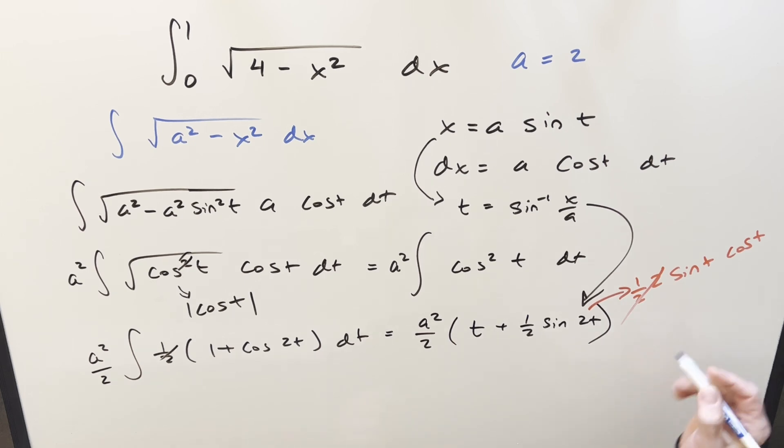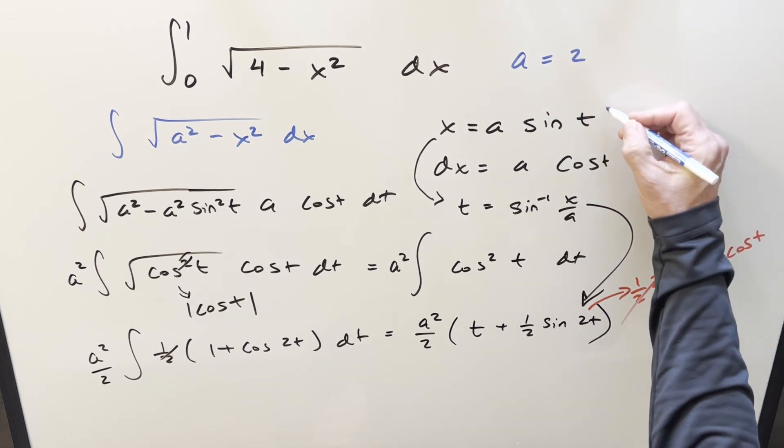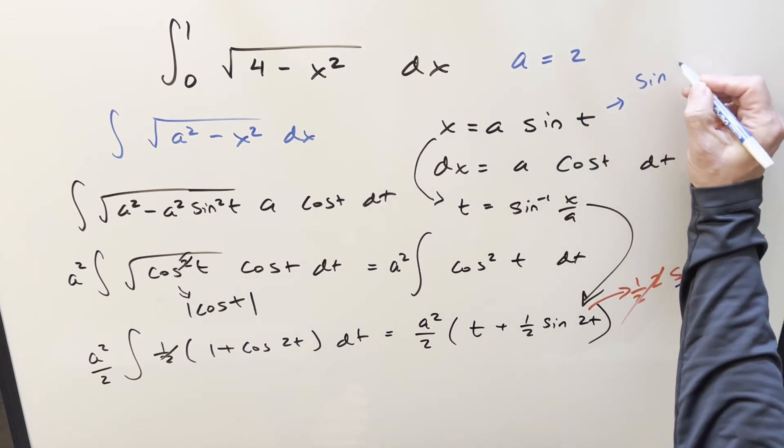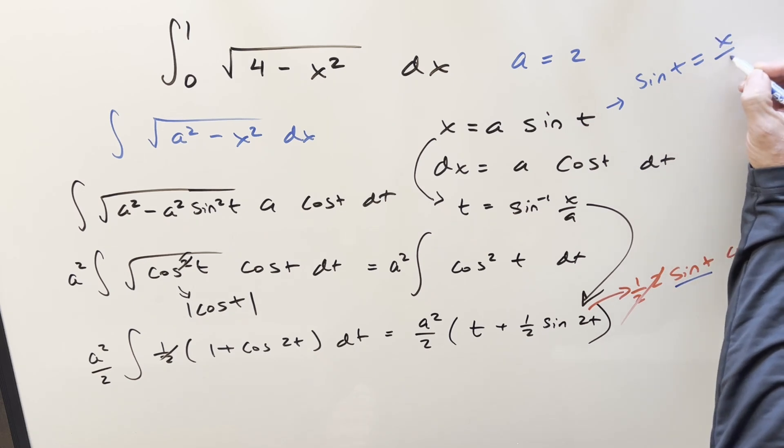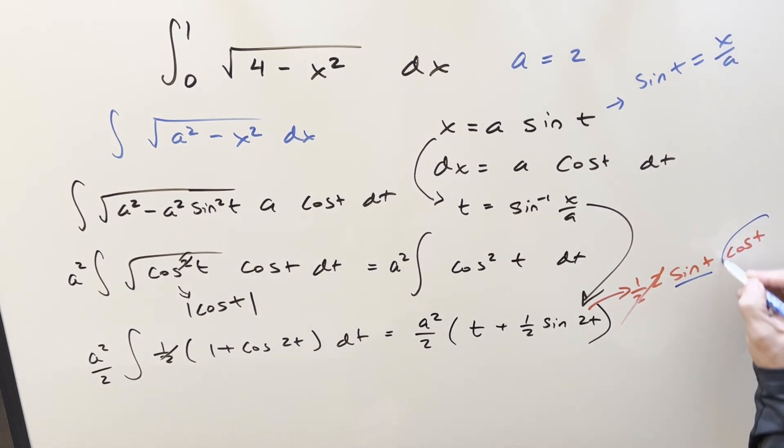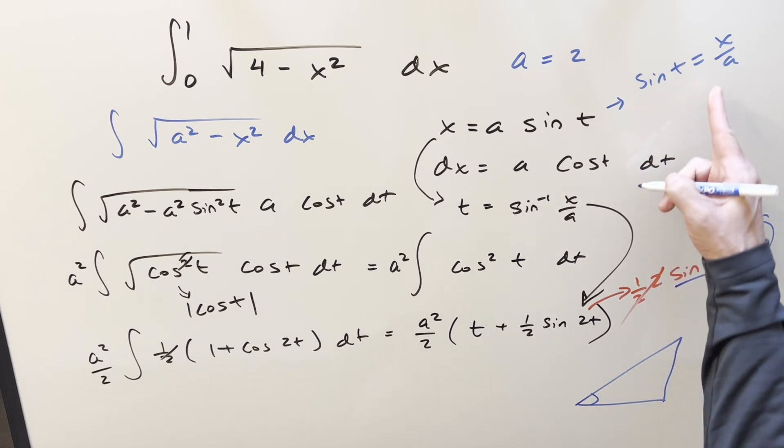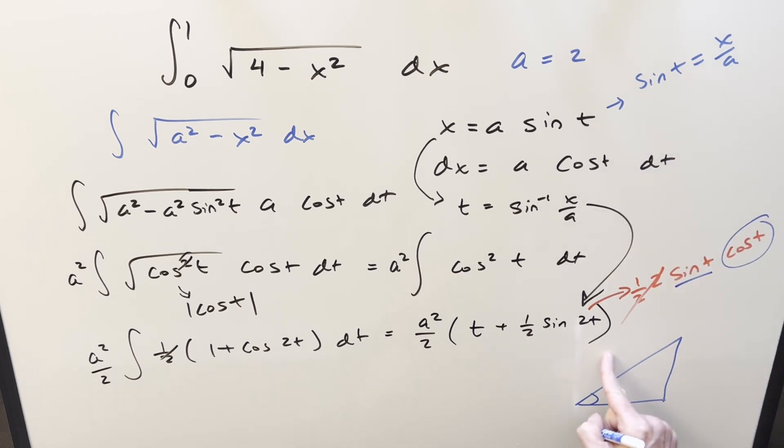So then when we back substitute, I basically have a value for sine t, just rearranging this we know sine t is going to be x over a, but what about cosine of t? Well for that we can draw our triangle really quick. So for sine t, if our sine is opposite over hypotenuse, x over a,